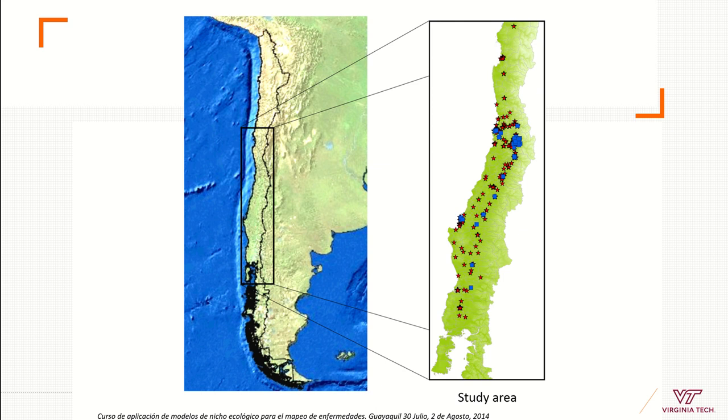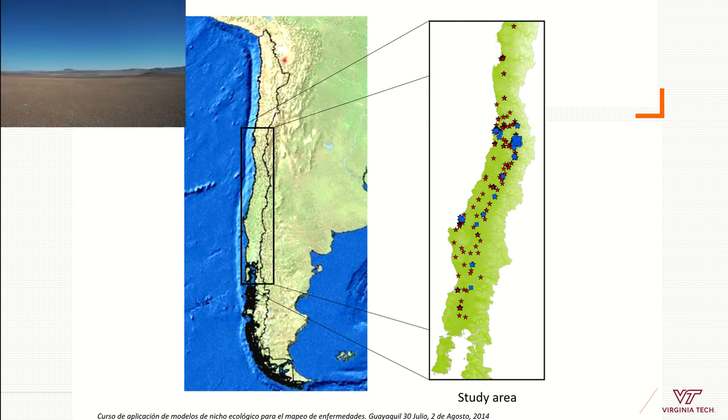This is another example here, modeling bats where bats occur. I wanted to model bats in Chile but I know that in the north we have the Atacama desert that is large, it's super dry, it's a natural barrier species cannot cross easily, this area here in the Atacama desert.